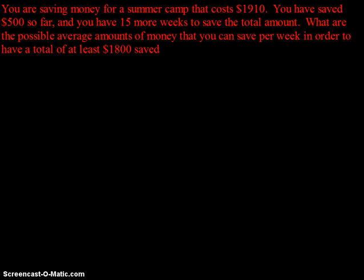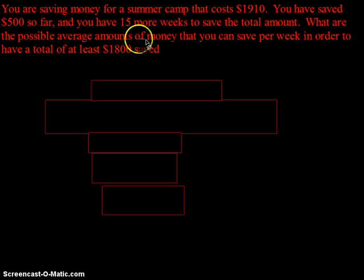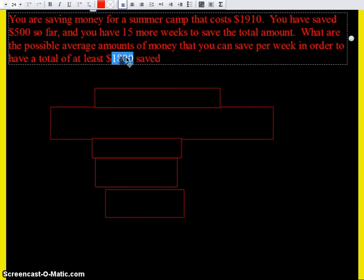Let's take a look at a word problem here, and this will be the last problem I'll go over in the video. Go ahead and read the problem. We're saving money for a summer camp that costs $1,910. You've saved $500 so far, and you have 15 more weeks to save the total amount. What are the possible average amounts of money that you can save per week in order to have a total of at least $1,910. Let me go ahead and fix that.